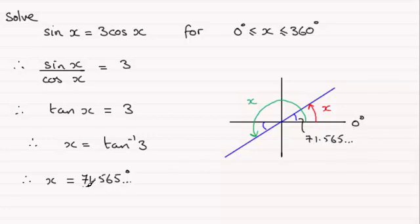Knowing that these two angles are exactly the same size, then to get the green x, all I need to do is 180 degrees plus the 71.565. If you do that, you'll find you get 251.565 and so on degrees.